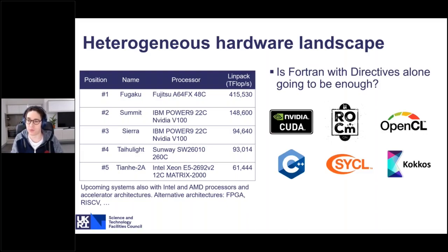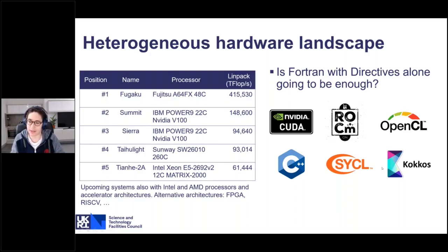So the question is: is Fortran going to be enough just with directives? In Cyclone we allow Fortran with OpenACC, but that's still directives. At the same time, vendors are spending a lot of resources improving their own software stacks — NVIDIA is developing CUDA, AMD is developing ROCm and HIP, and Intel has started investing heavily in SYCL through their OneAPI initiative. The US Exascale Computing Project is also porting many applications to the Kokkos programming model, so there is a lot of investment in new programming technologies not based on Fortran.